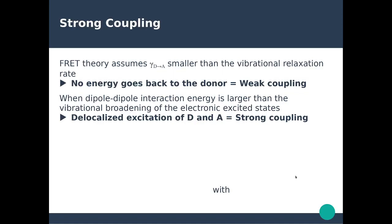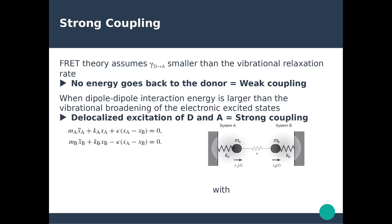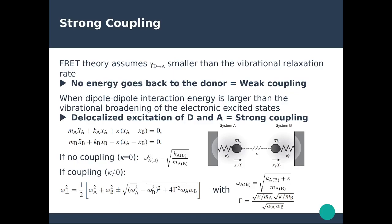FRET assumes a very small value of the energy transfer rate, which is smaller than the vibrational relaxation rate — so energy once transferred from donor to acceptor never goes back. This is the weak coupling regime. On the other hand, when dipole-dipole interaction is very large, it does not give rise to localized excitation on the donor and acceptor separately; instead it gives rise to coupling — you are in the strong coupling regime. Strong coupling can be described in the framework of coupled harmonic oscillators: a donor and acceptor coupled together. If there is no coupling, the energy of one molecule is unaffected by the presence of the other.